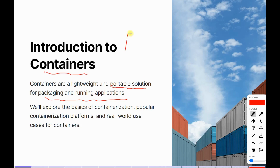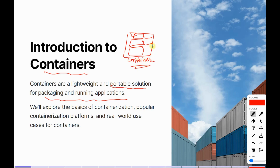For example, a container will have the required binaries to run your application, along with the libraries and dependencies needed. It also includes any required files. In short, a container is like a small version of a VM — everything is running inside it, but it abstracts the operating system. In today's session we will explore the basics of containerization, popular containerization platforms, and real-world use cases.